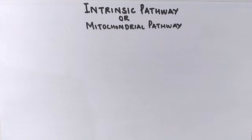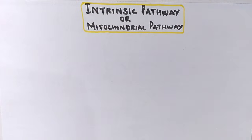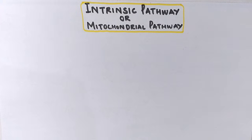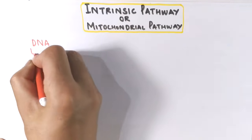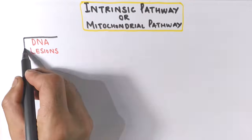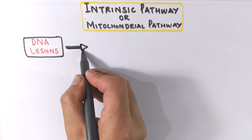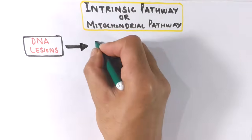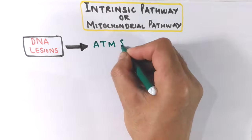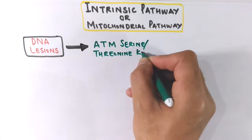The apoptotic factor BCL2-associated X protein — shortly called Bax — leads to cell death by regulating mitochondria to release apoptotic substances such as cytochrome C. Being the intrinsic pathway, the DNA lesion acts as the initiation for the apoptotic signal. When the DNA lesion is in the form of double-strand breaks, the first molecule recruited is ATM serine/threonine kinase.